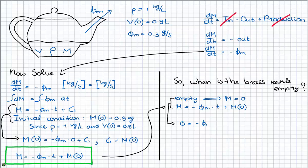This gives 0 is minus Vm times t plus the mass at time t=0. So I rewrite this for t and then I get 0.9 divided by Vm. But Vm was 0.3 grams per second, while M0 was 0.9 kilograms. So I have to rewrite this Vm into kilograms per second to get the units right, which is 0.003 kilograms per second.